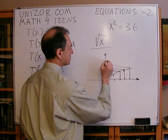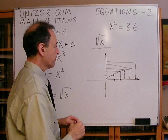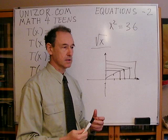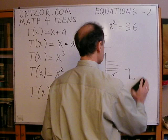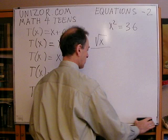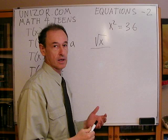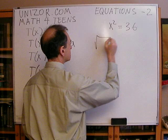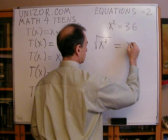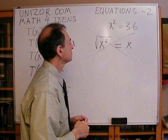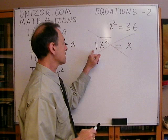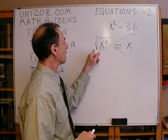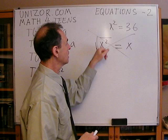Now this is a real function, because for every x in the domain — which is non-negative numbers — you get exactly one value. So we have a one-to-one correspondence between the domain of all non-negative numbers and the codomain, also all non-negative real numbers. For every non-negative y, you can find only one non-negative x.